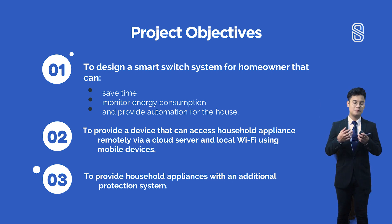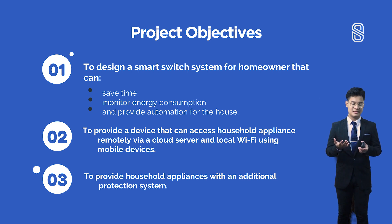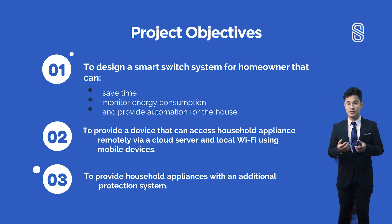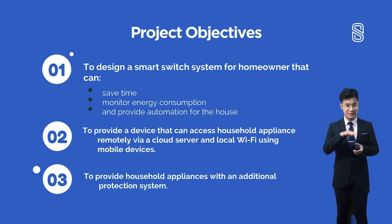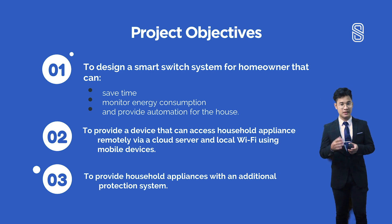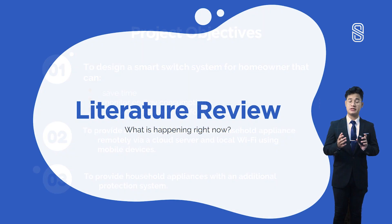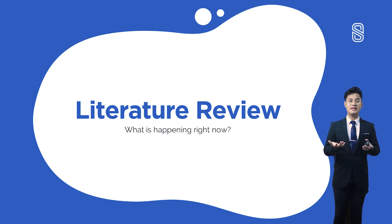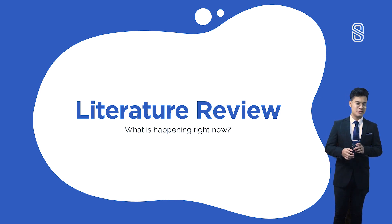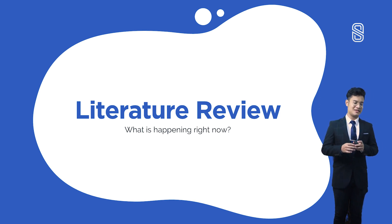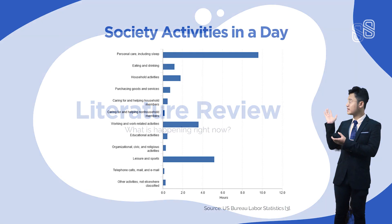The last objective is to provide household appliances with an additional protection system — three objectives in total. Moving to the second part, the literature review. This shows society activities throughout the day. I've highlighted three things: sleeping, working, and doing sports.